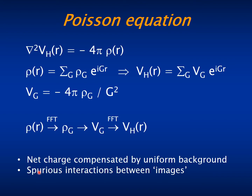The second consequence is that if you have dipoles or net charges in the system, this will induce a spurious interaction between different images of the charge in different unit cells. So you have to take this into account in the case of systems with charge or dipoles.